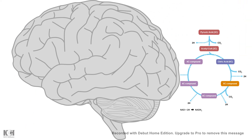In a normal state, the brain utilizes glucose as an energy source. It performs glycolysis and then channels the products into the Krebs cycle to generate more ATP — that is how metabolism normally works under a fed state.